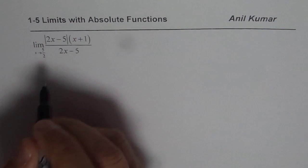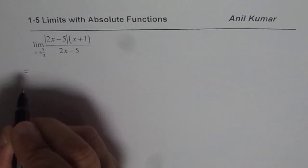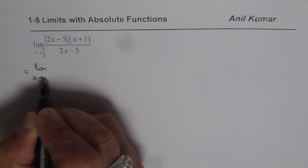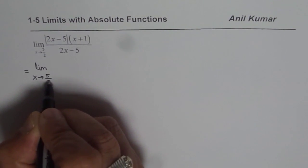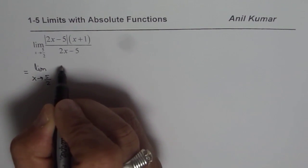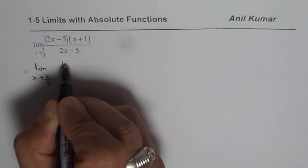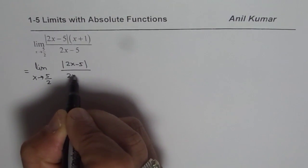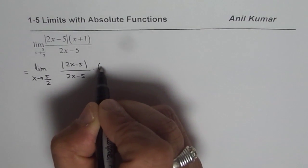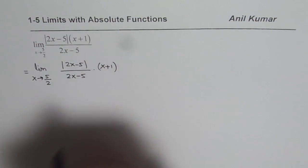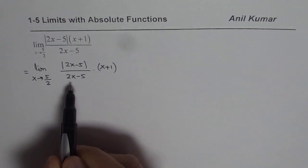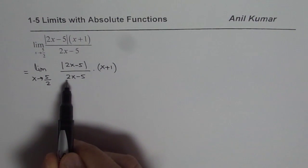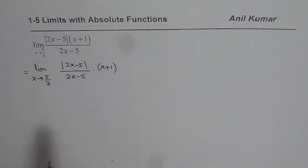In this particular case, let us rewrite this function with limit x approaching 5 over 2 — you could write 2.5 also. I will write this as a combination of the absolute function with its linear counterpart, which is 2x minus 5 times x plus 1. We will then analyze the part: absolute value of 2x minus 5 divided by 2x minus 5.